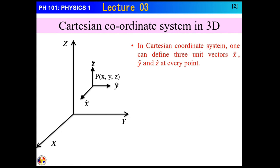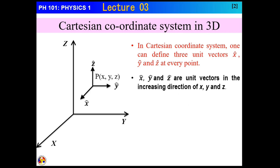Similar to two-dimension, here also we are going to have unit vectors. But now there will be three unit vectors: unit vector along x, unit vector along y, and unit vector along z. These unit vectors along x, y, and z are in the increasing direction of x, y, and z.